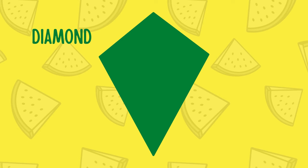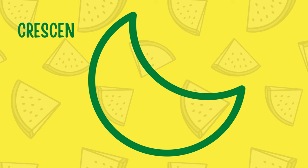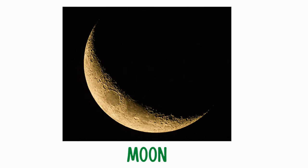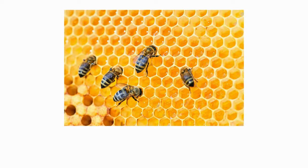Diamond — like the kite. Crescent — like the moon. Hexagon — like the beehive.